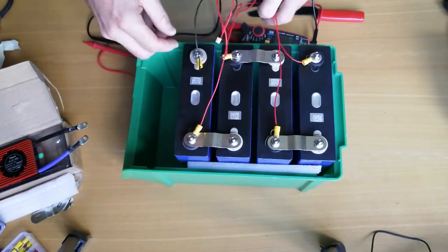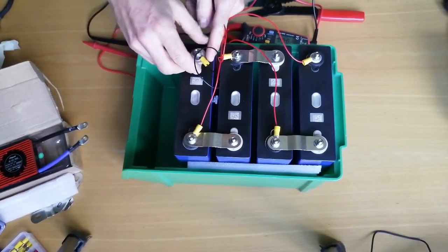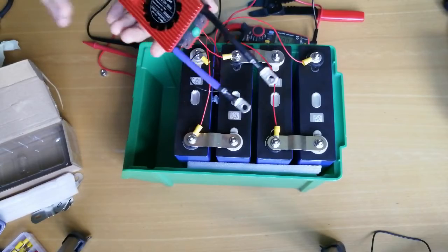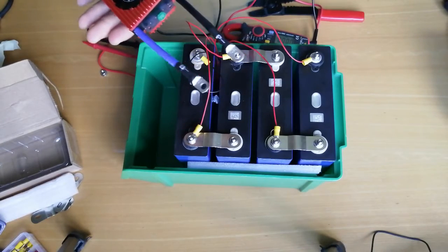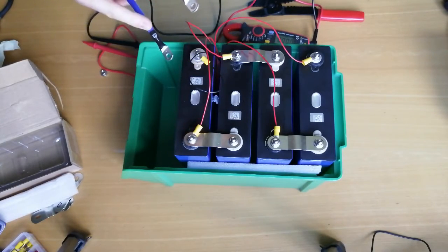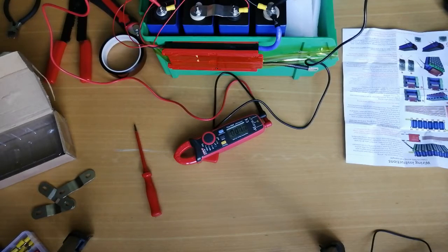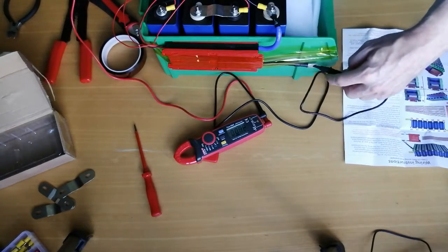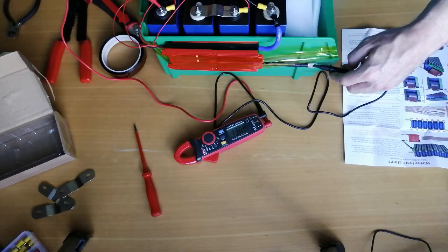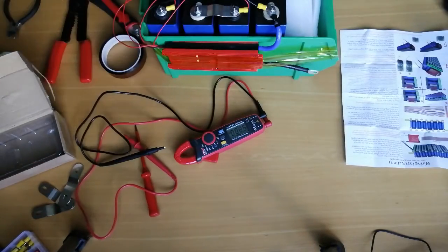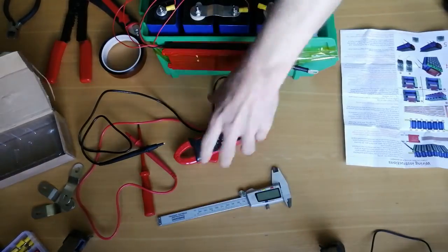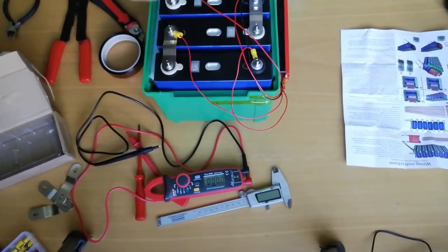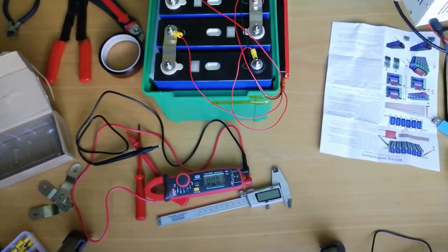And then you connect the B minus cable of the BMS to the battery, so that's in my case the blue one, and you connect that to the most negative terminal. And after that you should be able to measure the 13 point something voltage of the whole battery pack between the most positive one and the negative cable coming out of the BMS. If that is not the case, maybe you have to short the two thick cables of the BMS and then the BMS should be active.